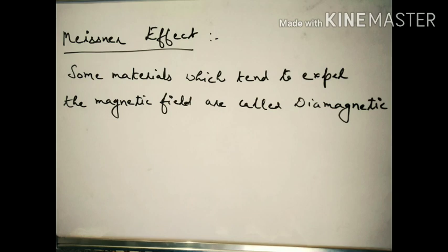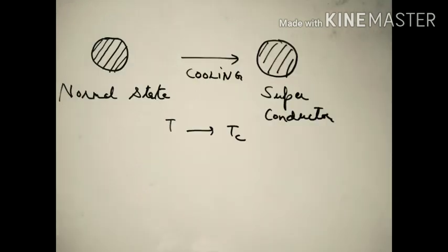The next topic is the Meissner effect. First you should know what diamagnetic materials are. There are three types: paramagnetic, diamagnetic, and ferromagnetic — we will discuss them in the next video. Diamagnetic materials are those which tend to expel the magnetic field. So we have taken a normal conductor and we start lowering its temperature.